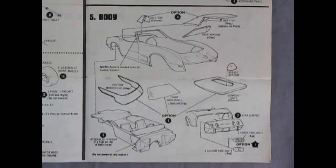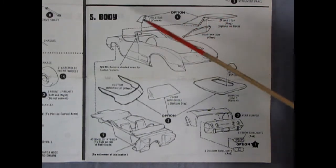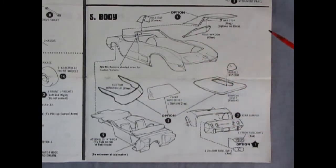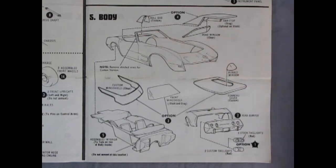Step five shows our body assembly. Here we have our optional hardtop roof with the glass, the roll bar, the body, the custom windshield or the front stock windshield, it's your choice. Here we have a tonneau cover with a bubble window. Then our rear bumper goes on the back. You've got an option of two different types of tail lamps. And then there's our interior going up into the body.